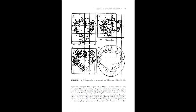Plans are developed during design. The purpose of qualification is the verification and validation of the system's design. Verification addresses the following question: Does the component, element, segment, or system meet its requirements — or have we built the system right? Validation, which is often combined with acceptance testing, demonstrates that the system satisfies the user's needs — or have we built the right system? Note that as verification moves farther from the system, it is not possible to conduct enough testing to prove anything statistically. Demonstration is often the best that can be done. It is expected, though not desired, that there will be issues and problems that arise as part of this qualification process.